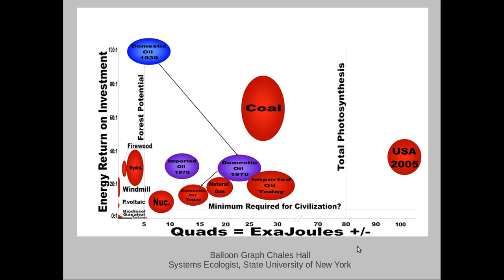This line here represents total photosynthesis — all of the energy, about 80 exajoules, produced by all of the plants in the continental United States in a given year. Every leaf on every tree, every kernel of corn, every grain of rice, every grain of wheat — add all that up. The United States in 2005 used 25% more than the total photosynthetic product of all the plants on the continent. So if people start talking about fueling our economy with biofuel, they're talking about defying the laws of physics, at least in terms of the current economy.